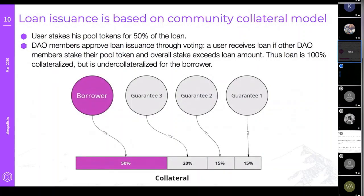Loan issuance is based on a community collateral model. The current implementation mimics the way existing community banks and rotating savings societies work, insofar as the borrower has to provide at least a portion of the collateral — in our case 50%. However, existing DAO members effectively co-sign the loan — they have to vouch for the member, which is reflected in staking.